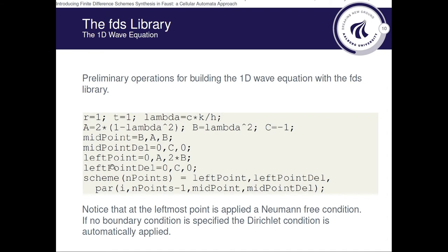And here we define a Neumann boundary condition only for the leftmost point. So here's why we defined a different coefficient matrix for the left point.